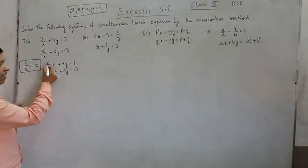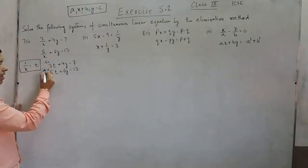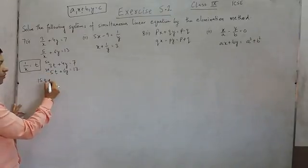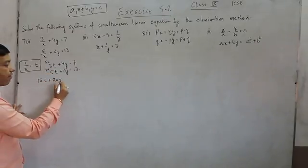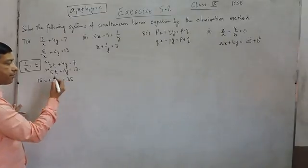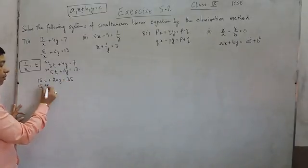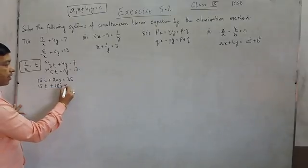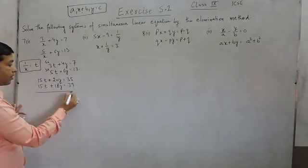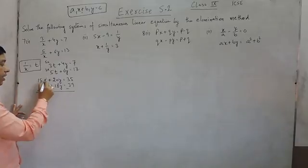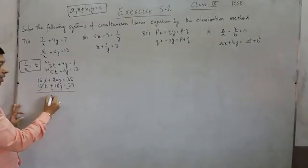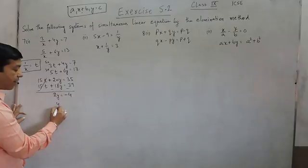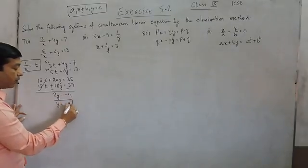I multiply the first equation by 5 and multiply the second equation by 3. So the first equation becomes 15t plus 20y is equal to 35, and the second equation will become 15t plus 18y is equal to 39. Subtracting the two equations, this can be cancelled out. So the value of 2y will become minus 4 and the value of y will become minus 2.